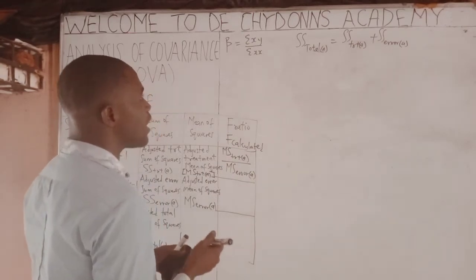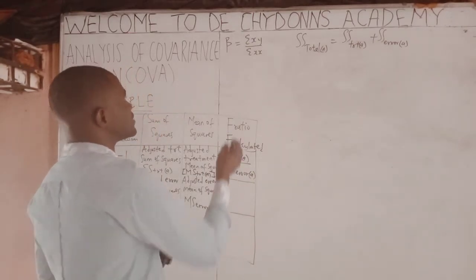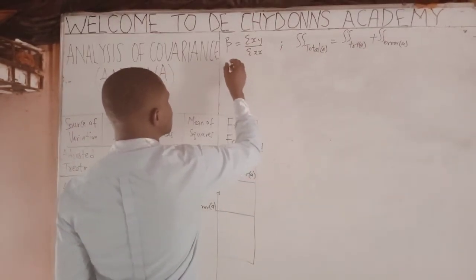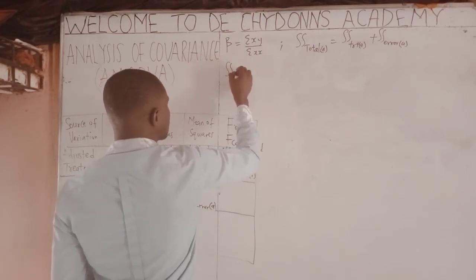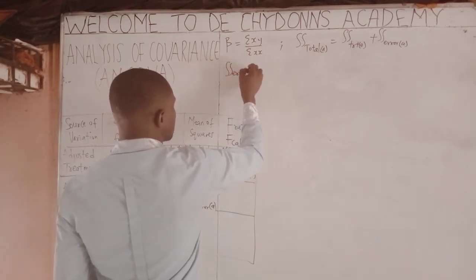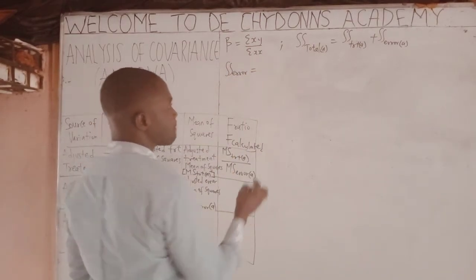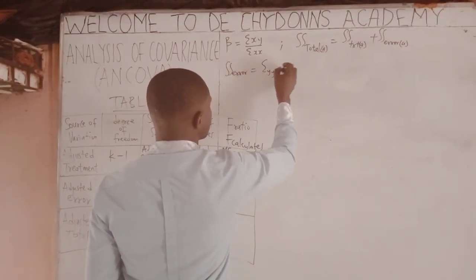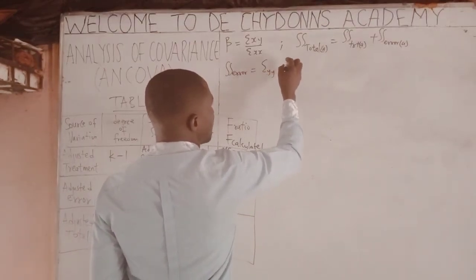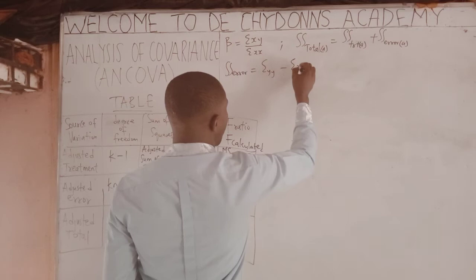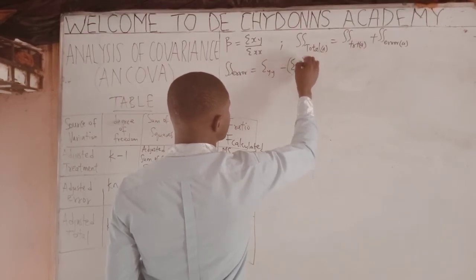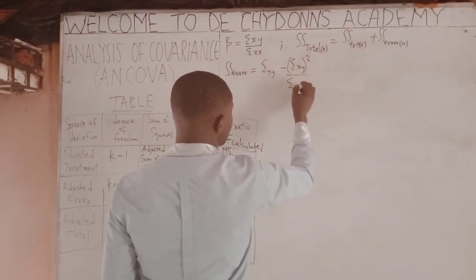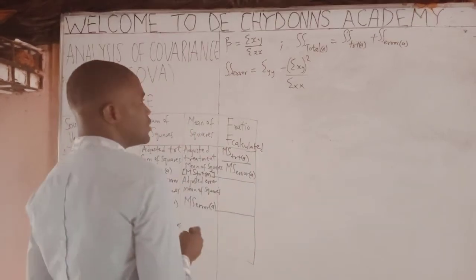Now, what is the formula for SS error? We said SS error equals SYY minus the summation of XY squared, all over the summation of XX.